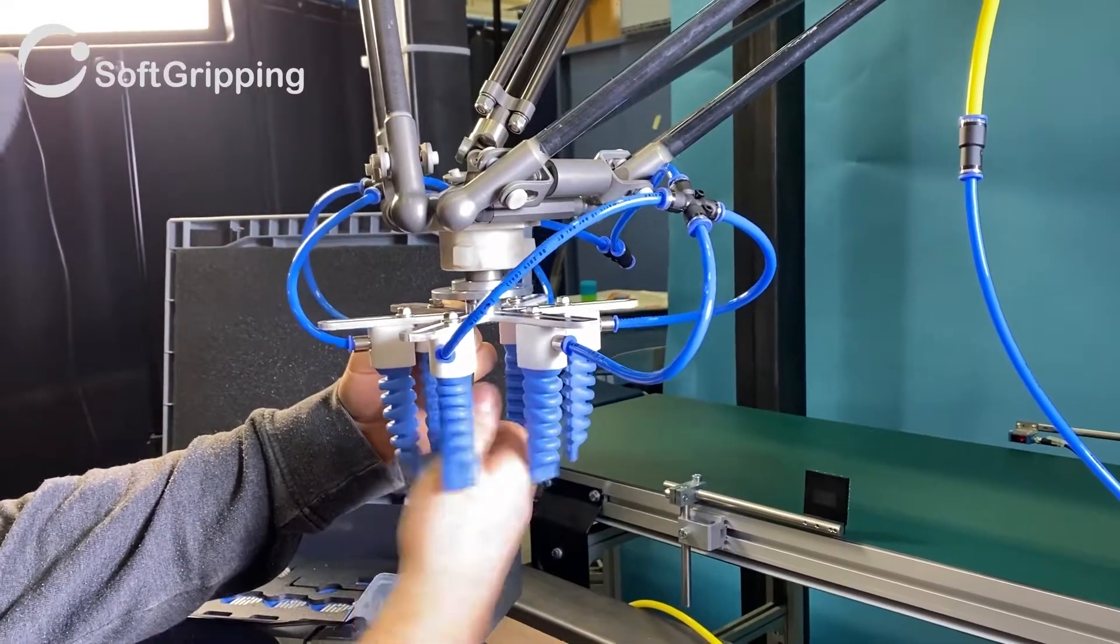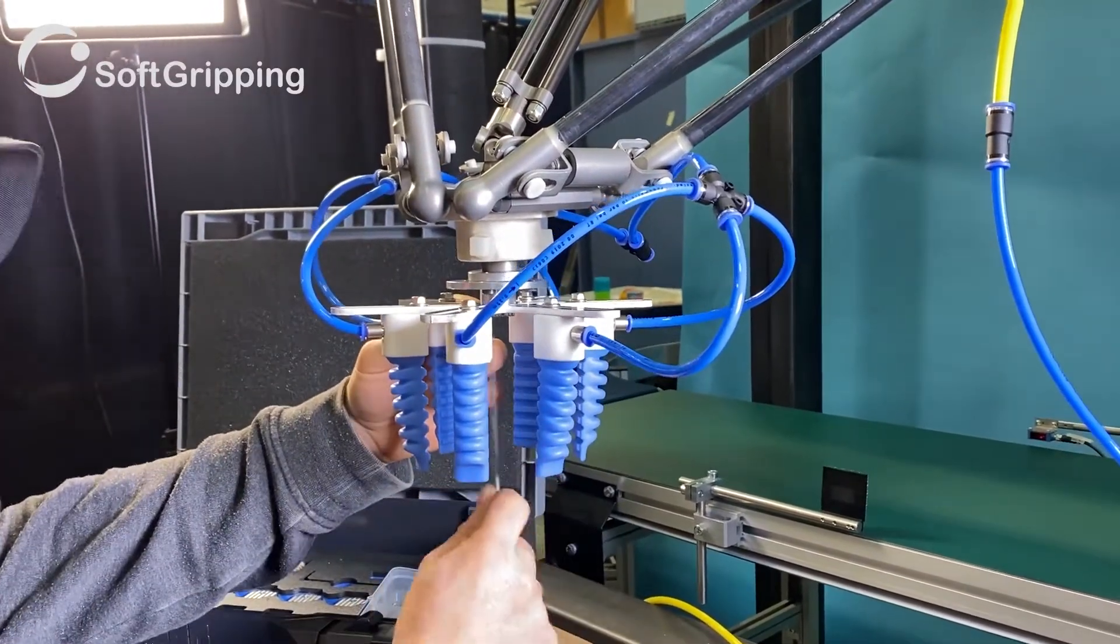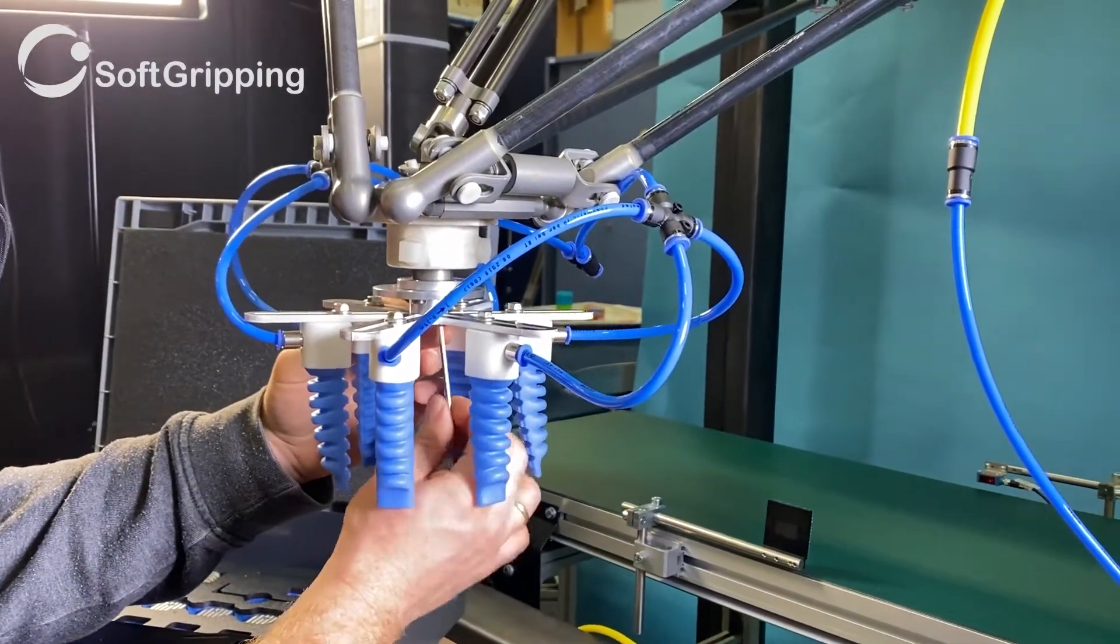Again, especially for Delta robots and Scala robots you have to turn off the robot's movement before you attach the gripper to the robot.